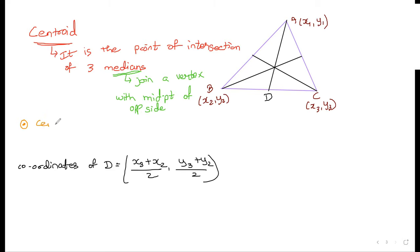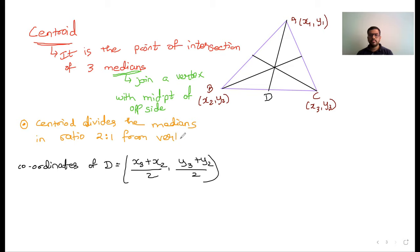Centroid divides the median in ratio 2:1 from the vertex. It divides all three medians in this ratio from the vertex side. So if we denote the centroid by G, then AG is 2 ratio and GD is 1 ratio.